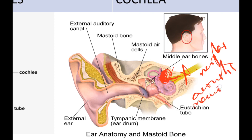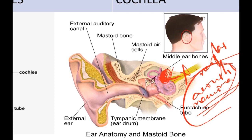Other causes include neoplasms, especially acoustic neuroma, which is also a differential diagnosis for Meniere's disease. In acoustic neuroma, there is a tumor in the cerebellopontine angle which compresses the eighth cranial nerve — and usually the seventh and fifth cranial nerves as well — leading to sensorineural hearing loss.